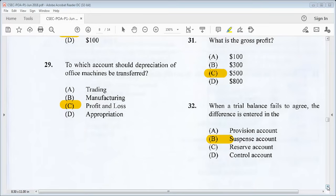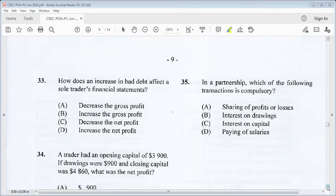Let's go on to 33. It says, how does an increase in bad debt affect a sole trader's financial statements? We know that it decreases the net profit. C would be our answer.